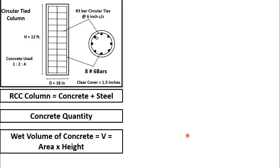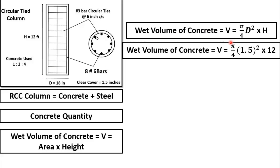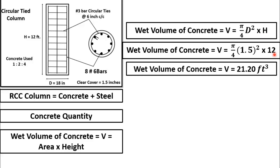Wet volume of concrete can be obtained by using the simple formula: area multiplied by height. Since the column is circular, the cross-sectional area is equal to (π/4)d². So the volume becomes (π/4)d² multiplied by h, the total height of the column. The diameter is 18 inches, which divided by 12 gives 1.5 feet. Multiplying the cross-sectional area by the total height of 12 feet, we get the wet volume of concrete as 21.20 cubic feet.